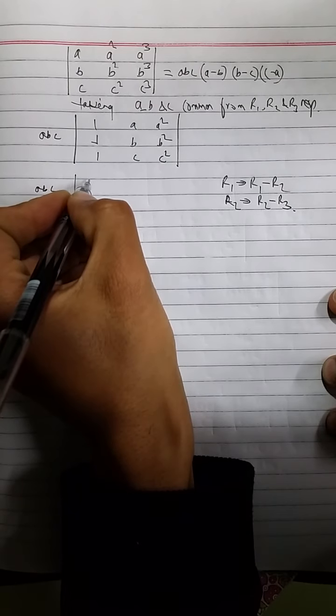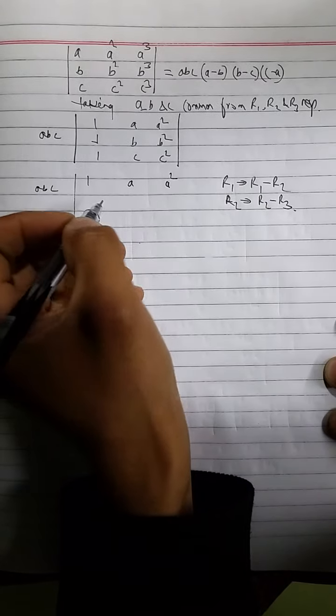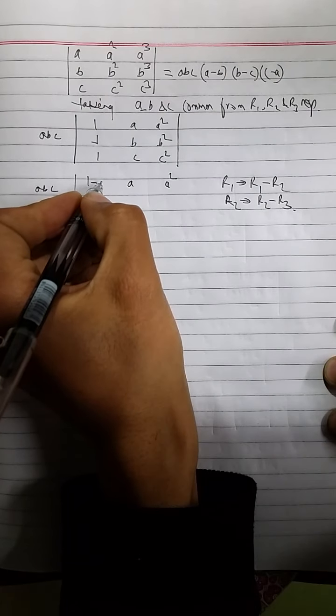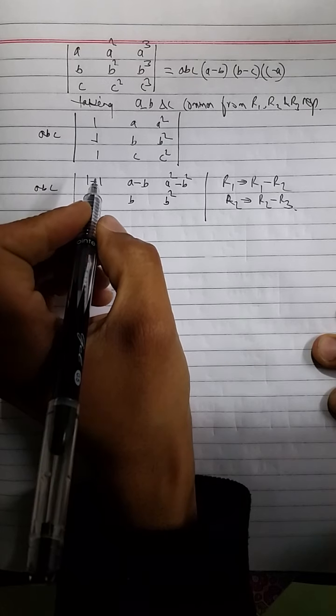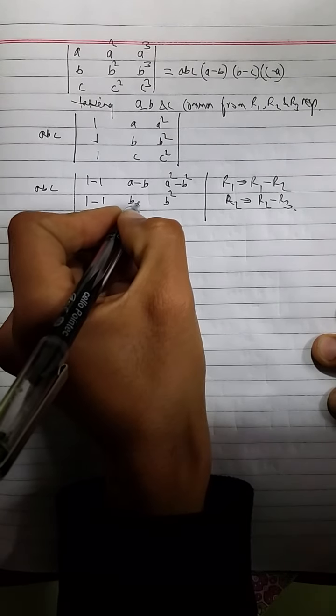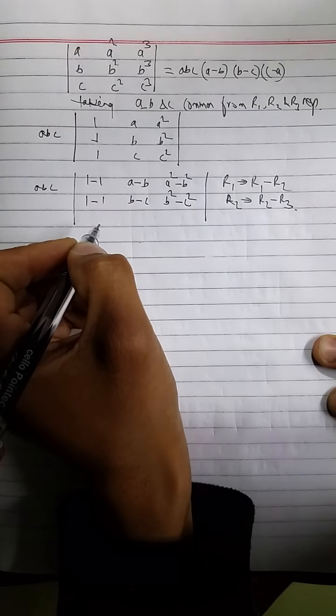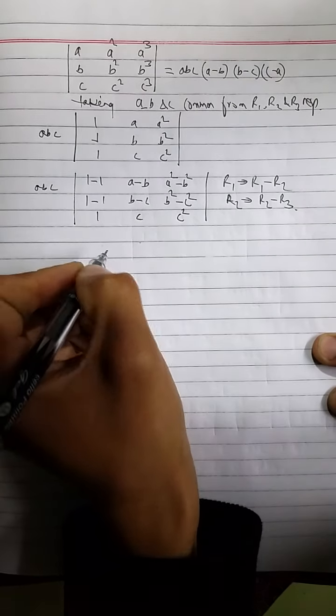Now, doing so, we get, first copy the elements of row 1, then get the corresponding element from row 2 subtracted. 1 minus 1, A minus B and A square minus B square. Doing the same for row 2. Elements of row 2 are copied down same and corresponding elements of row 3 are subtracted from this. 1 minus 1, B minus C, B square minus C square. And no iteration is made for row 3, so its elements are copied down same.